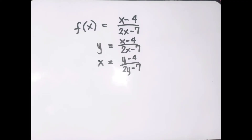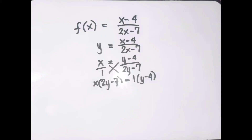Since we have a rational expression, let us cross multiply: x equals y minus 4 over 2y minus 7. So x times 2y minus 7 equals y minus 4. Expanding: x times 2y is 2xy, x times negative 7 is negative 7x, equals 1 times y which is y, and 1 times negative 4 is negative 4. Now we have 2xy minus 7x equals y minus 4.